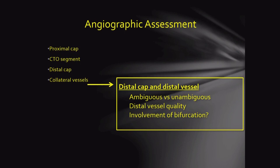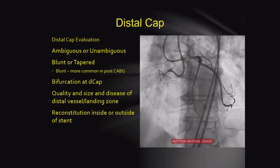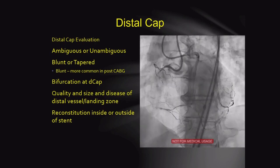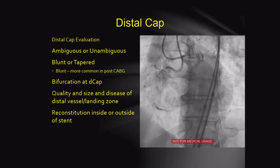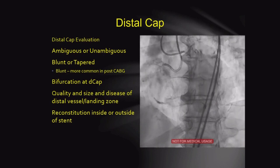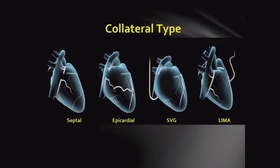For the distal cap, assess whether it is ambiguous or non-ambiguous, distal vessel quality, and involvement of bifurcation. We can visualize the distal cap and distal vessels to determine the bifurcation anatomy and whether it is a poor target. For collateral vessels, assess: type of collaterals, tortuosity, and angle of connections. There are four types of collaterals: septal, epicardial, venous graft, and LIMA.